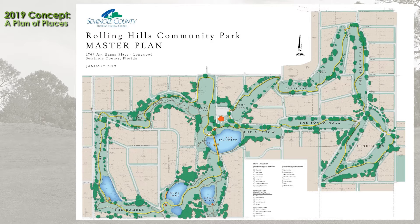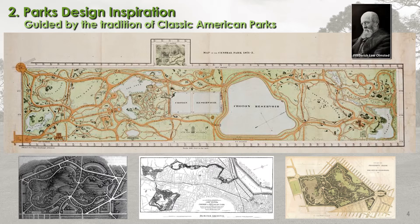In January 2019, the vision for the conceptual plan for Rolling Hills Community Park was presented at a public meeting to the Board of County Commissioners. The vision for the Rolling Hills project finds its foundation in the work and philosophy of America's father of landscape architecture, Frederick Law Olmsted. The inspiration for the design approach of Rolling Hills can also be found in parallels to some of America's most classic parks.